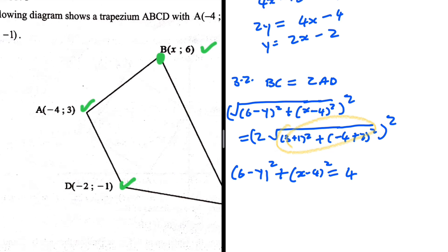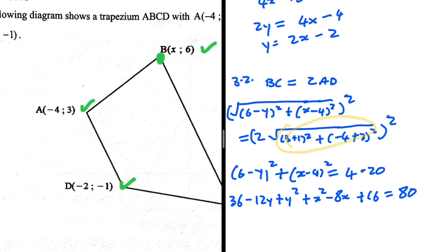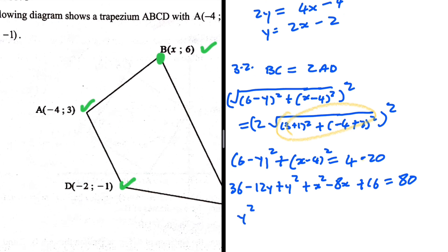We can put the AD side into our calculator since there are no variables: (3 + 1)² + (−4 + 2)² gives us 20. So we have 4 × 20 = 80. Now expanding (6 − y)²: 36 − 12y + y², plus x² − 8x + 16, equals 80.